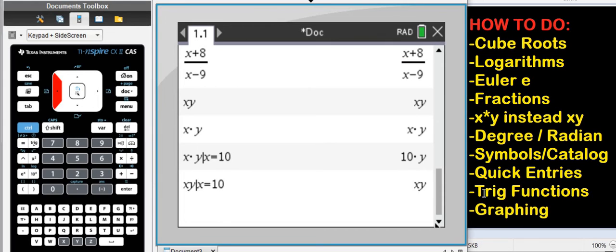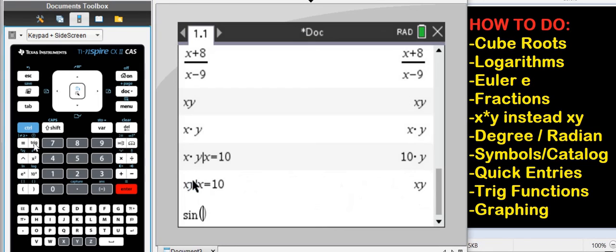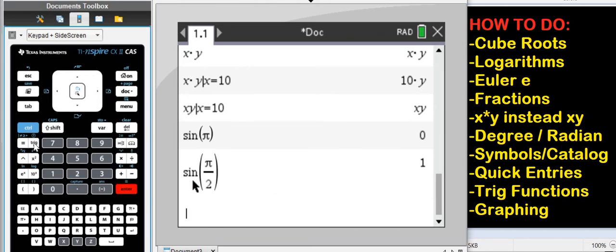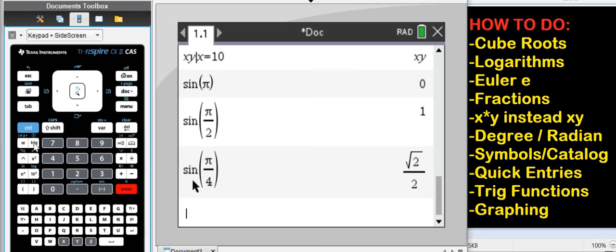That also brings us to trig functions. All the trig functions are hidden under the trig button. There you see them. Sine of, let's say, pi is zero. Notice we are in radian mode. Sine of pi over 2. Sine of pi over 4. Root 2 over 2.